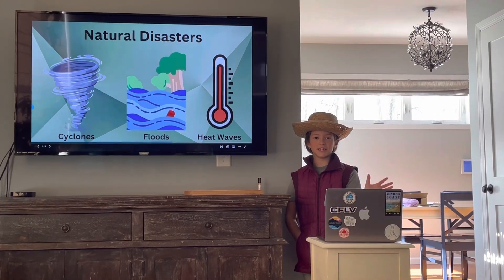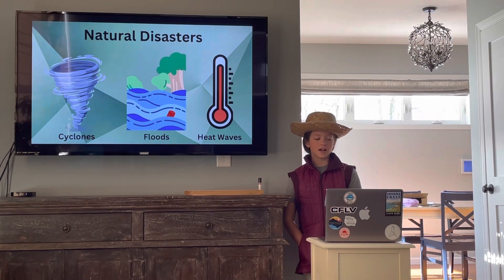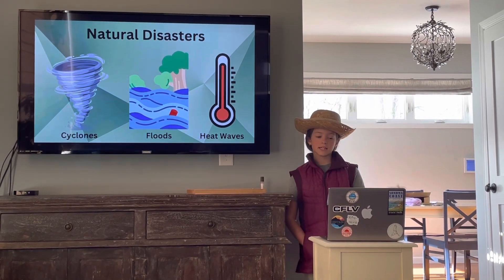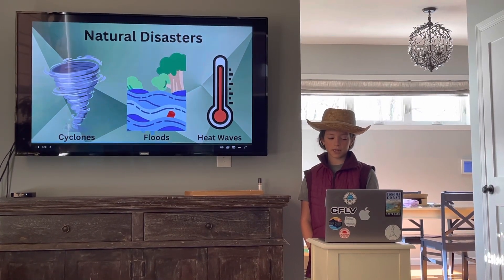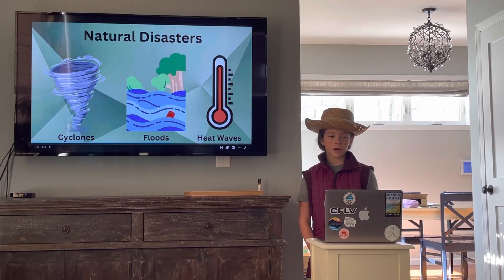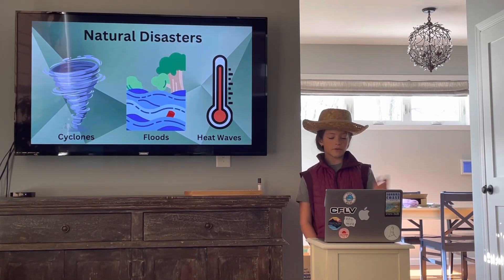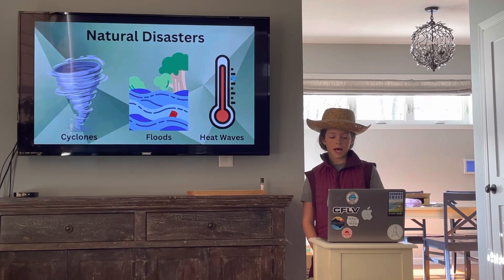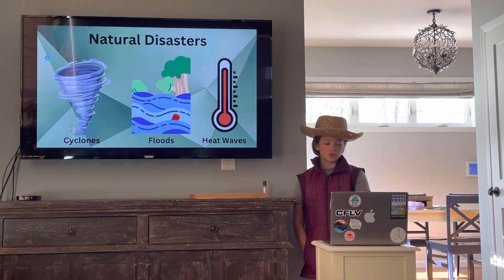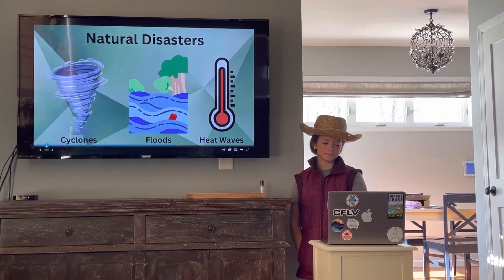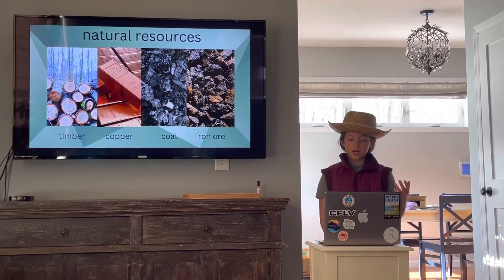Natural disasters that occur in Australia include cyclones. Cyclones are basically like hurricanes — in the northern hemisphere they're called hurricanes, but in the southern hemisphere they're called cyclones. They also have floods, which happen when there is excessive rainfall, and heat waves, which is when it's extremely hot and hard to survive.